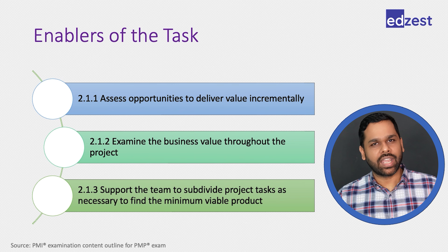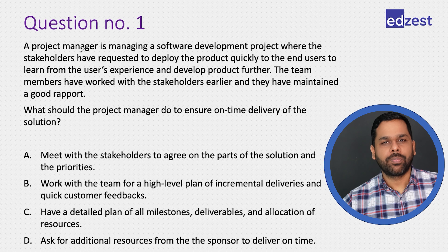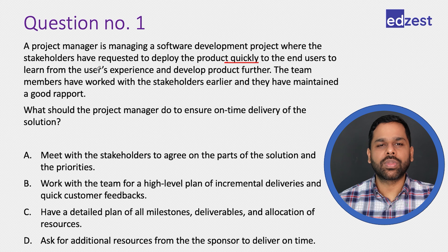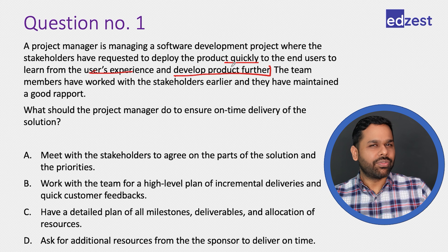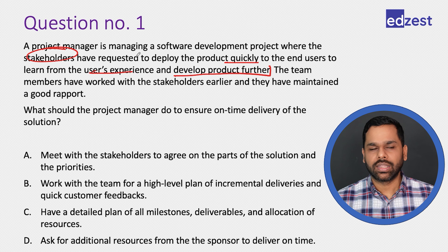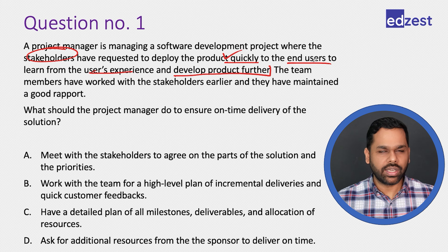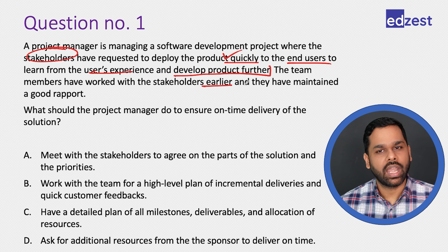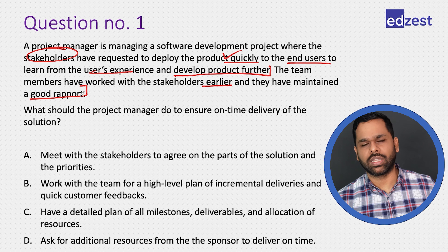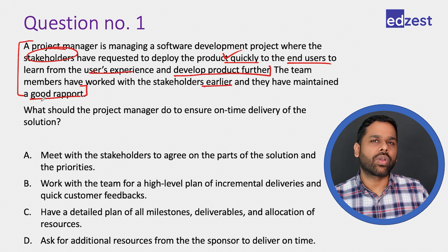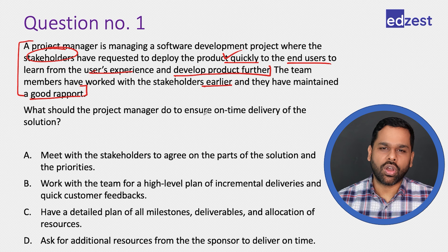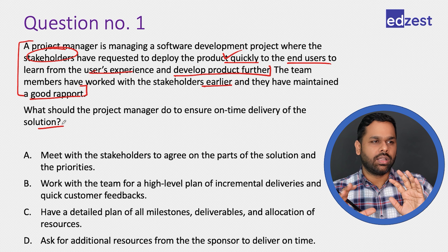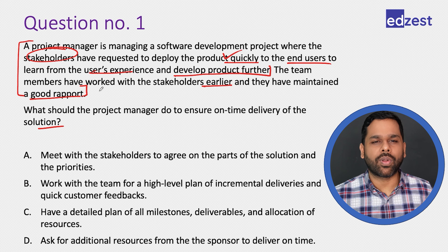Question one: A project manager is managing a software development project where stakeholders have requested to deploy the product quickly to end users, to learn from the user's experience and develop the product further. The team members have worked with the stakeholders earlier and maintained a good rapport. What should the project manager do to ensure on-time delivery of the solution?